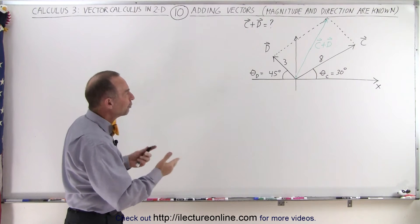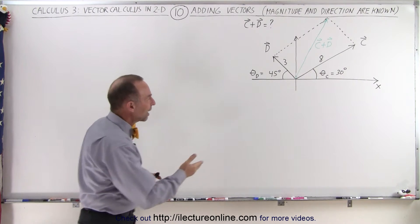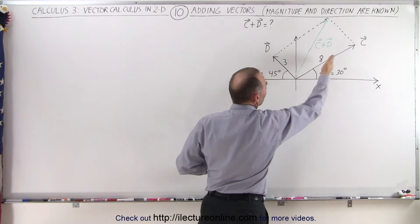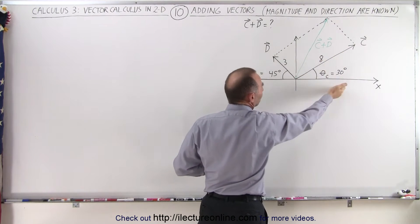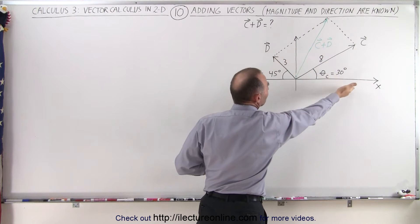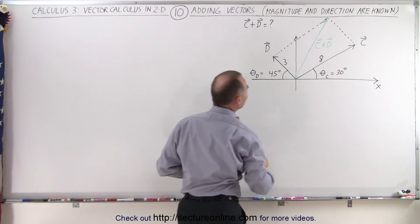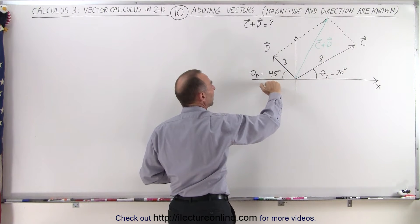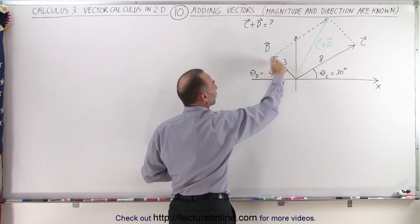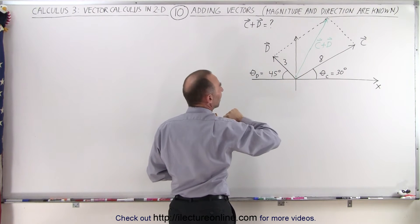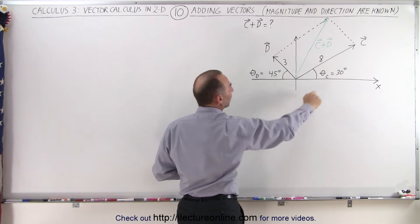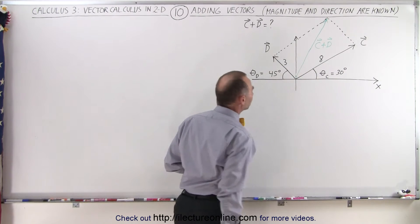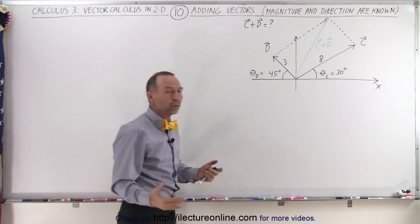We have to add two vectors together. We have vector C pointing to the right in an upward direction, about 30 degrees above the positive x-axis, and vector D pointing in the direction 45 degrees above the negative x-axis. The magnitude of vector C is 8, and the magnitude of vector D is 3.